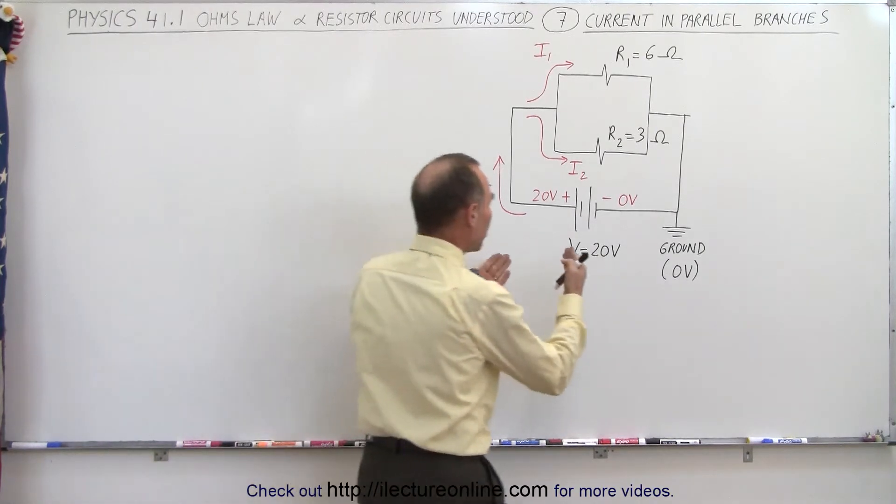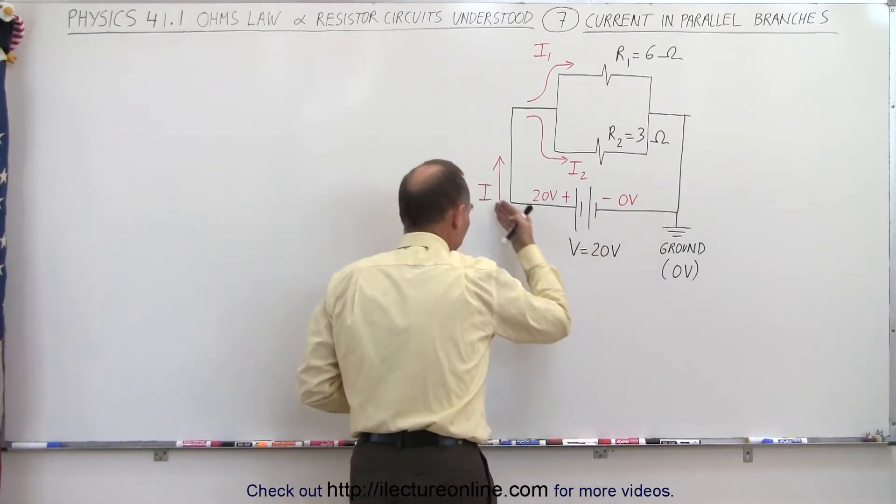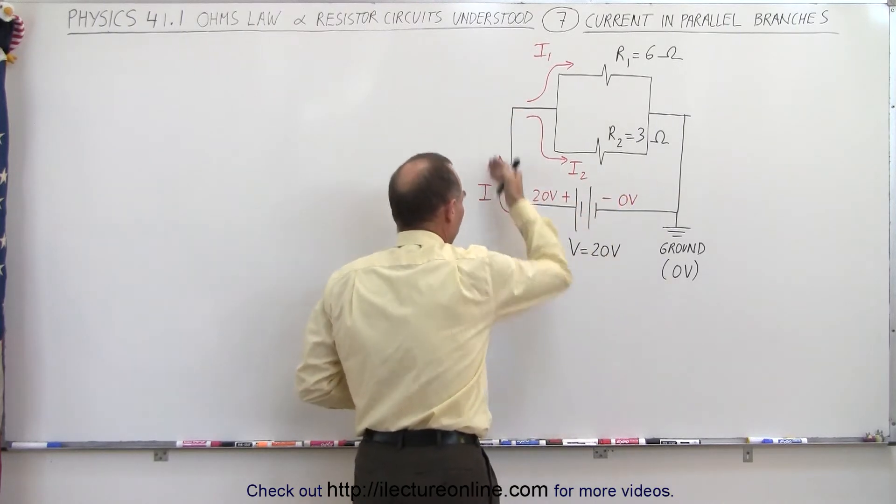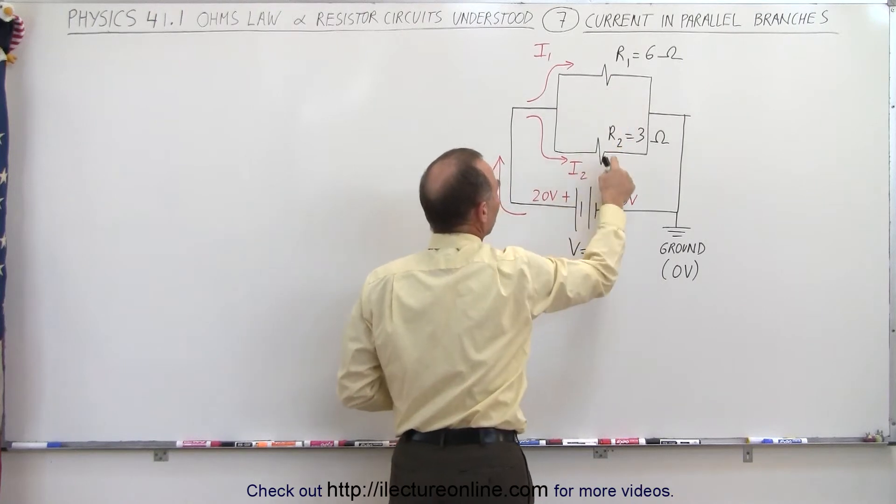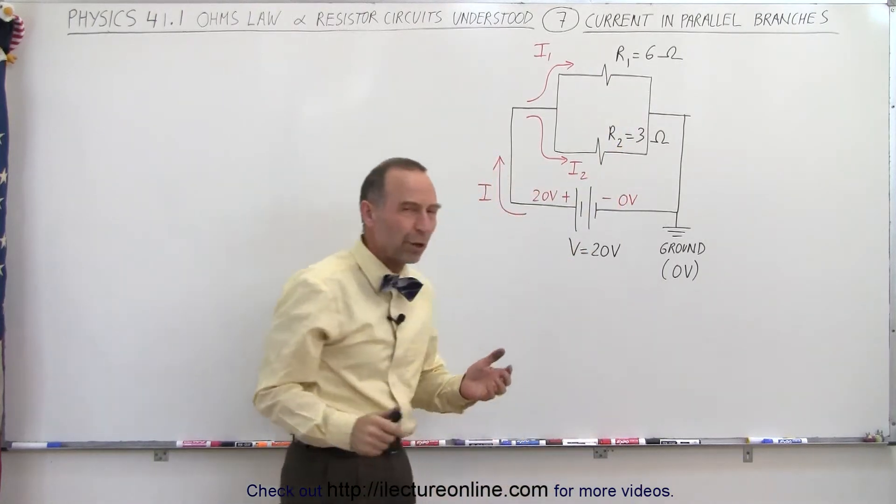We have a 20-volt battery that's basically pushing charges through the circuit, therefore developing a current. We have two resistors, R1 in the top branch being 6 ohms and R2 in the bottom branch being 3 ohms.